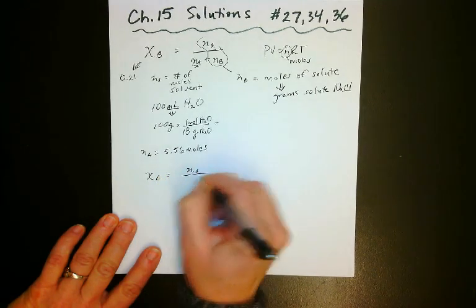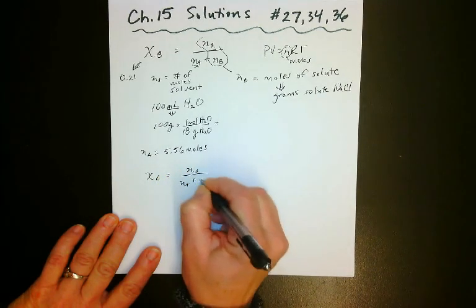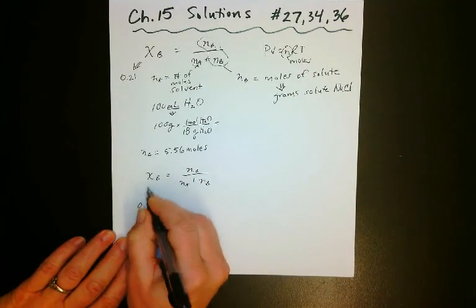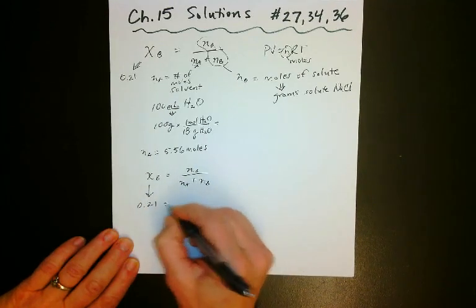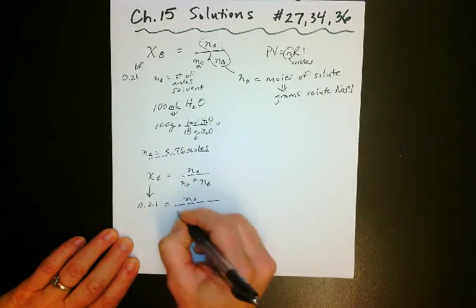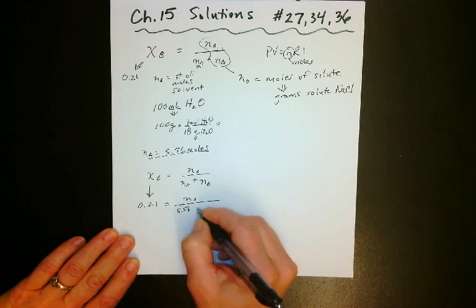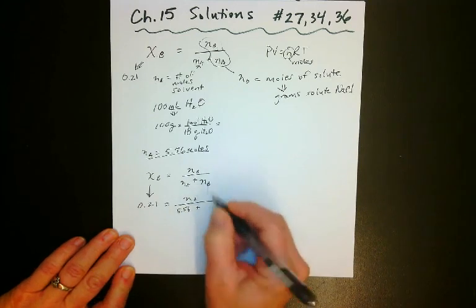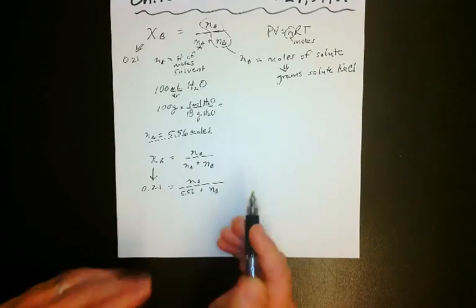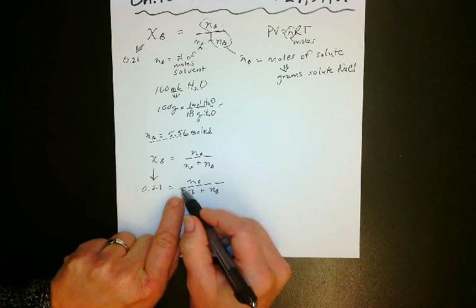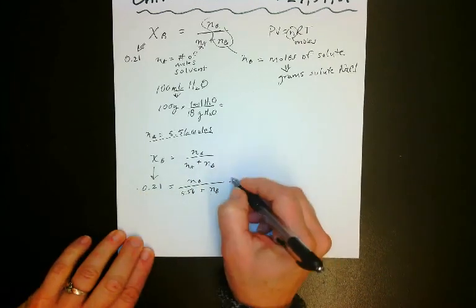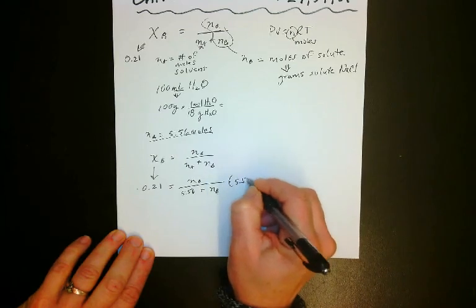XB equals NB all over NA plus NB. And now from here, it's just algebra. 0.21 is substituted in. And I don't know what my NB is. So I'm just going to write NB again. But I do know my NA. I just found it. That's going to be 5.56. And then my NB again. So algebraically, I need to get NB by itself. So I'm going to have to move this over. And to move that over, if I'm dividing, I'm going to have to multiply. So I'll multiply both sides by 5.56 plus NB.